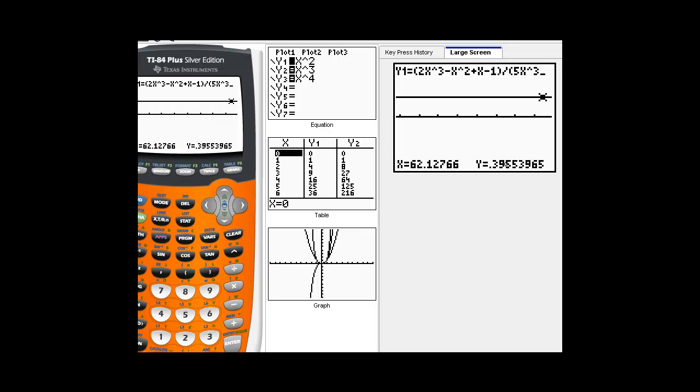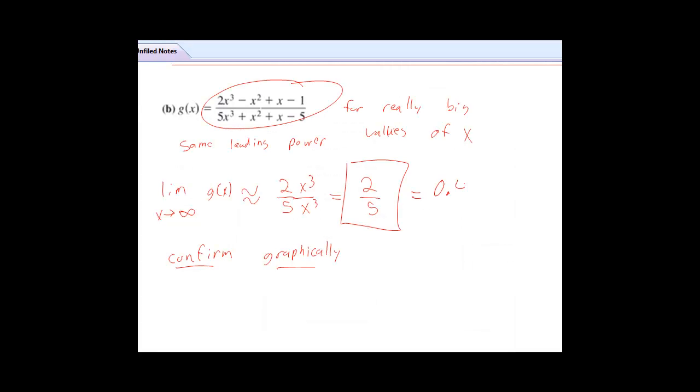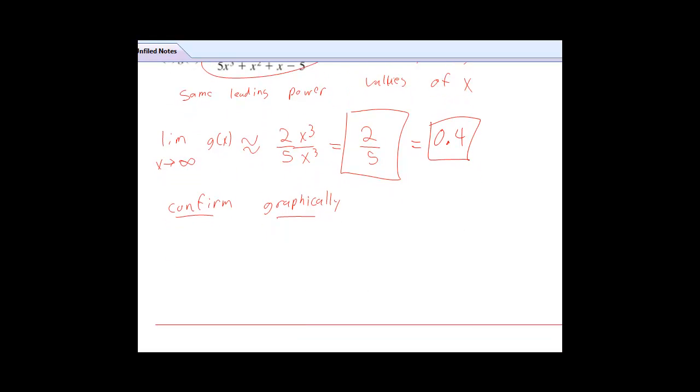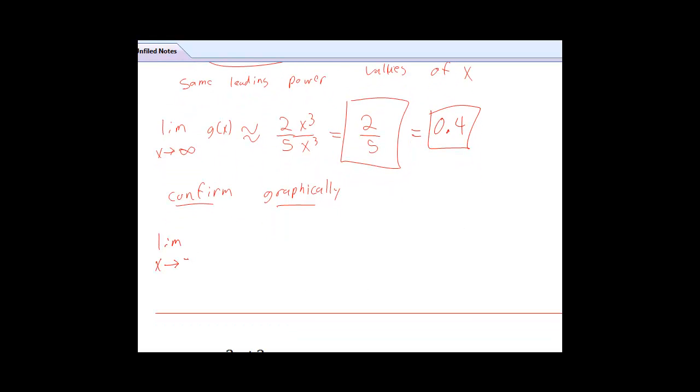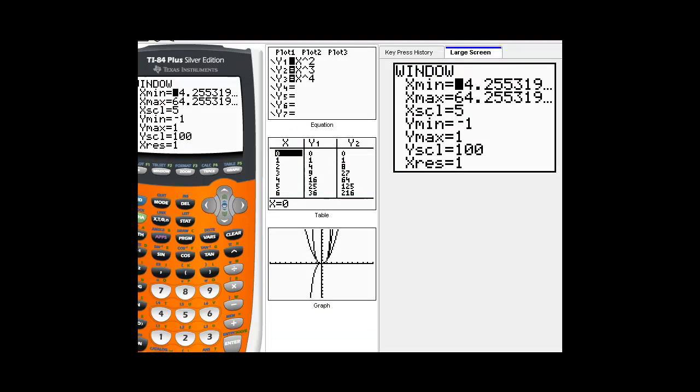I approach 0.4. 0.4 is just the decimal equivalent of 2 fifths. And the same thing happens as you approach negative infinity, as you go to the left forever. Because this function, this 2x cubed over 5x cubed function, that thing approaches 2 fifths, approaches 2 fifths as you go to the left forever.